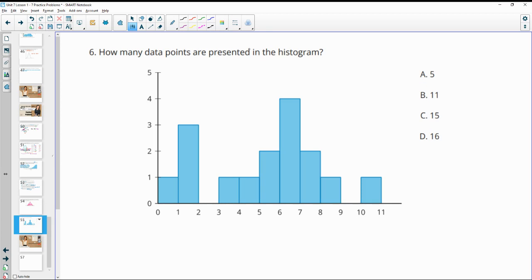Number six: How many data points are present in this histogram? So we'd want to add up all these numbers. So between this interval, there's one. This interval, there's three. Here there's one, one. Two in this one. Four in this one. Two, one, and one. So if we add all those together, we end up with 16 data points.